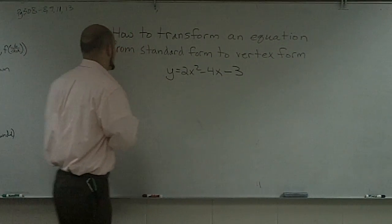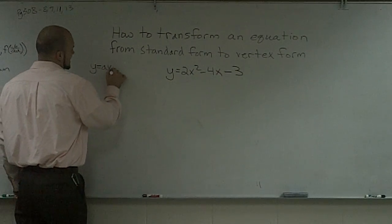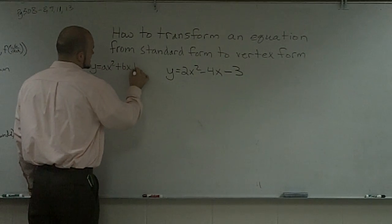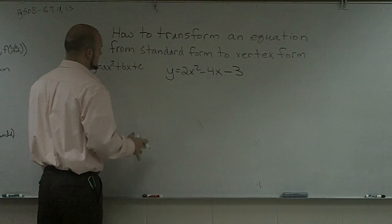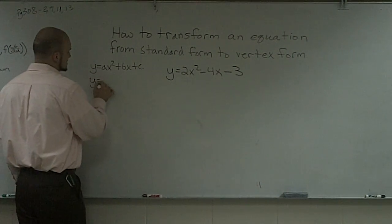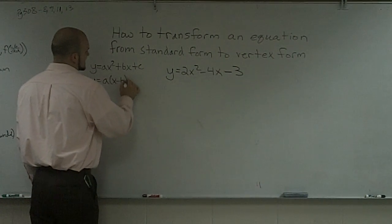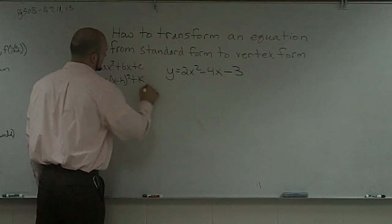Remember that our standard form is in the form of y equals ax squared plus bx plus c, which we have right here, and our vertex form is in the form of y equals a(x minus h) squared plus k.